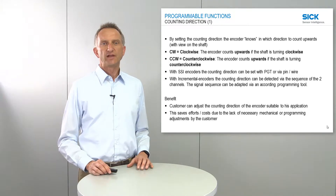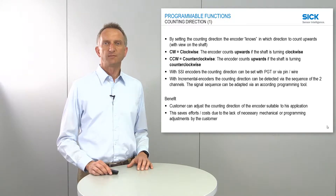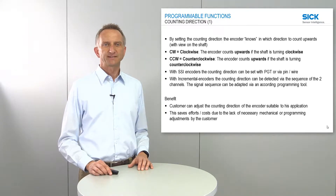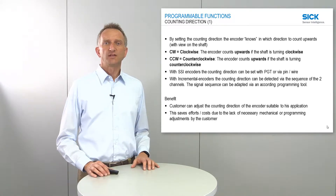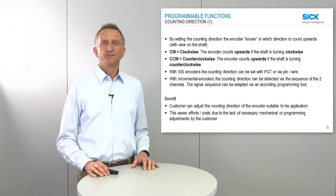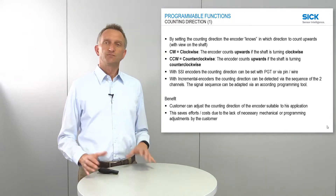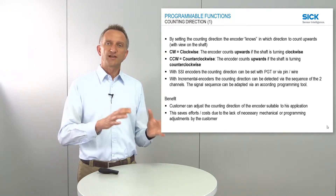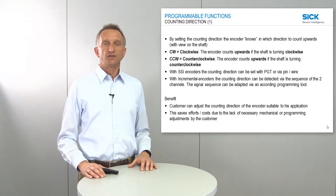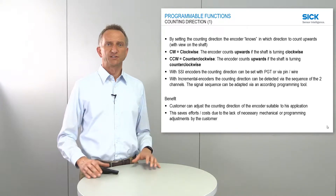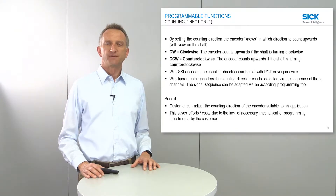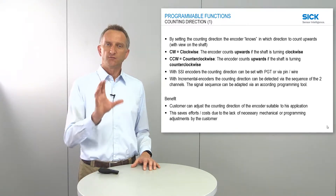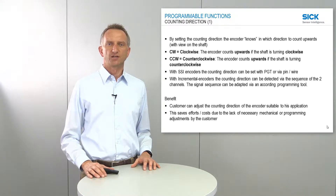Another very helpful programmable function is the counting direction. By setting this counting direction, the encoder knows in which direction you want to count — upwards or downwards. The counting direction is always defined by viewing onto the encoder shaft.